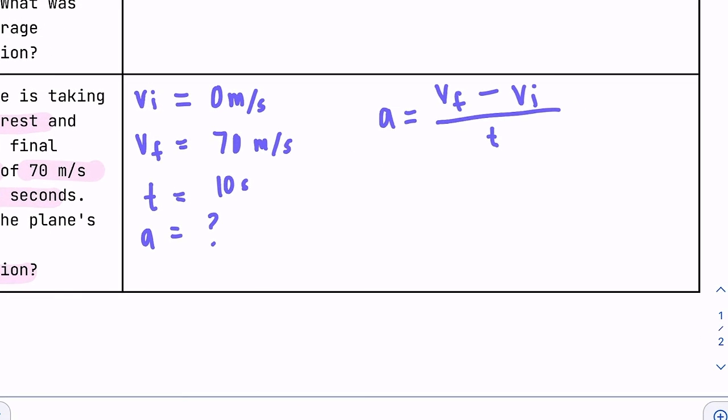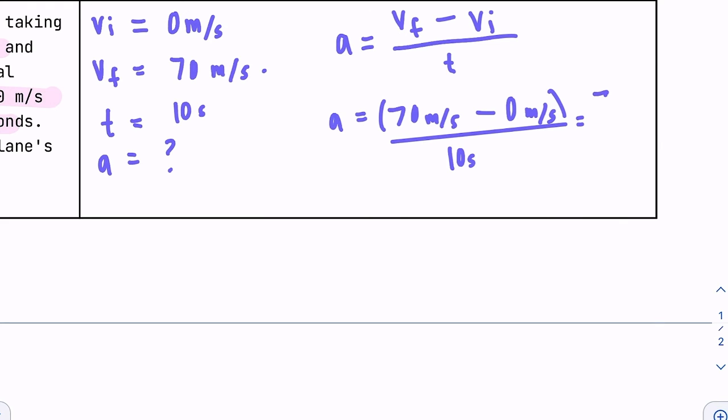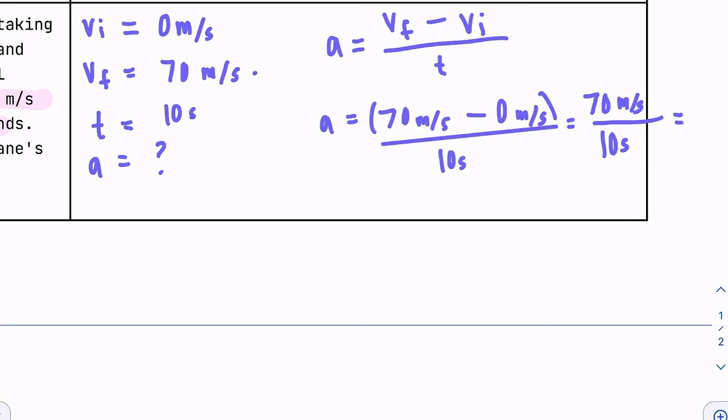I already have my equation written out in its pure form, and now I can add in those numbers. So A is equal to final velocity, 70 meters per second, minus initial velocity, which is just zero, all over 10 seconds. And we'll do what's in the numerator first, but there's not much to do, because it's just going to be 70 meters per second. And if we reduce this, we will get seven.